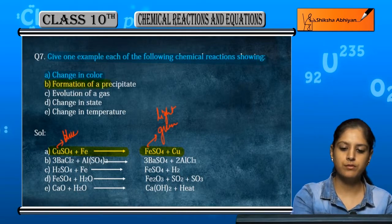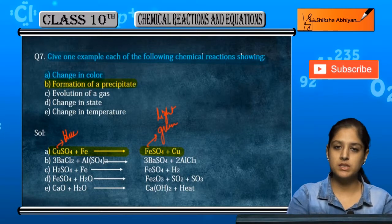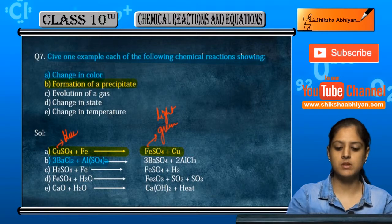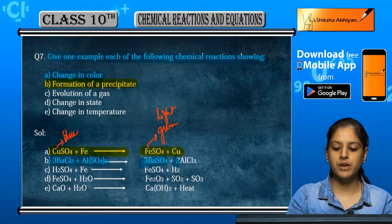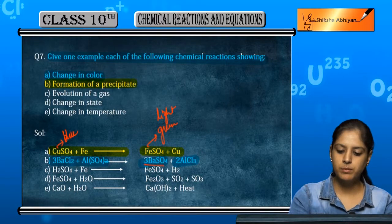Formation of a precipitate. In the previous equation, we have done an example: barium chloride and aluminum sulfate gives barium sulfate and aluminum chloride. The precipitate is barium sulfate.